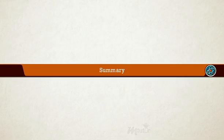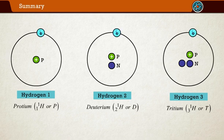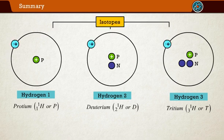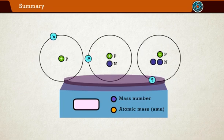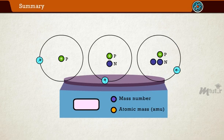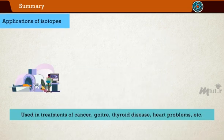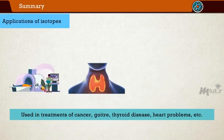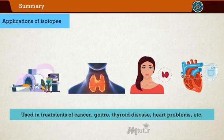Summary. The atoms of the same element having the same atomic number but different mass numbers are called isotopes. We can represent it by taking the average mass of all the isotopic forms of an atom of that element. Isotopes are used in treatments of cancer, goiter, thyroid disease, heart problems, etc.